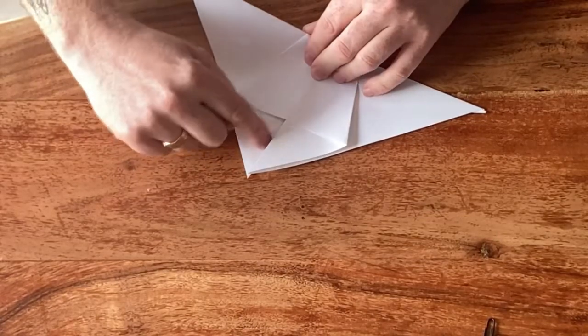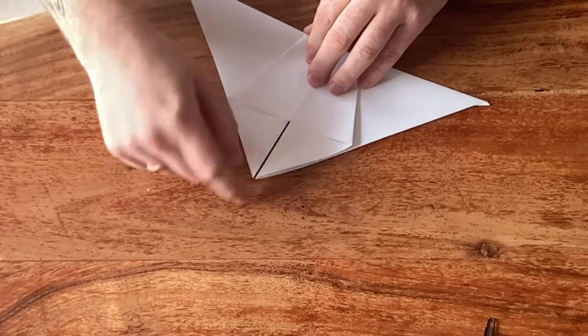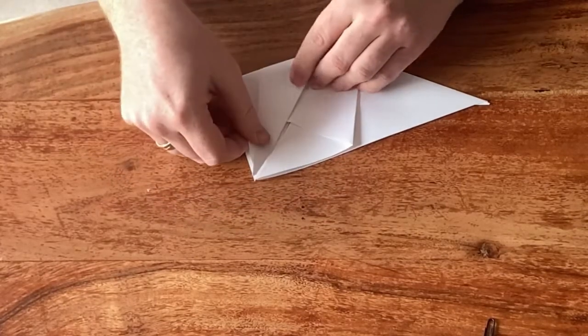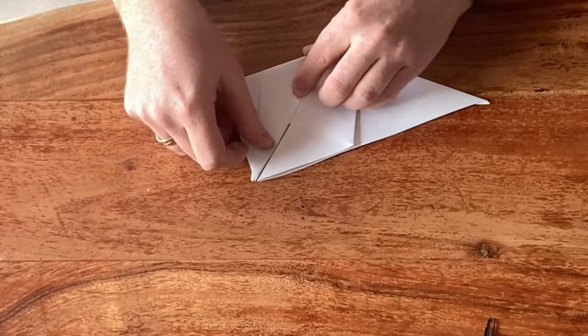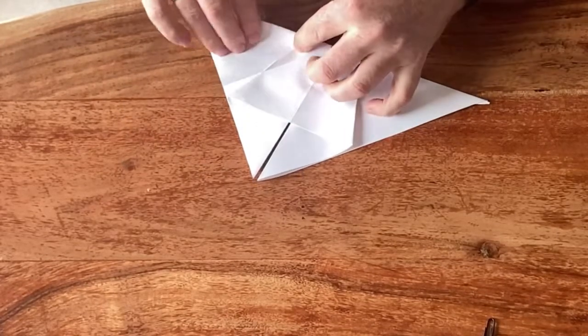Then fold this edge towards the center. You want to align it with this—so not with the center line but with this flap—because it's usually slightly open, so just lay it on there. Then we're going to fold over that crease.